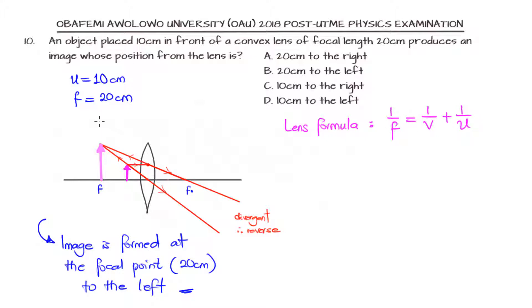If we plug in these values, we have 1 over 20 equals 1 over v plus 1 over 10. Moving 1 over 10 to the other side, 1 over v will be 1 over 20 minus 1 over 10. Finding the LCM of 20: 20 in 20 is 1 times 1 equals 1, minus 10 in 20 is 2 times 1 equals 2. So I have 1 over v equals minus 1 over 20, meaning that v is minus 20.